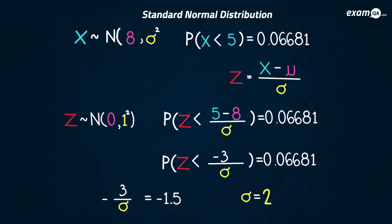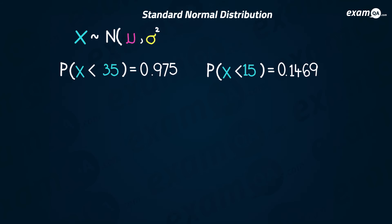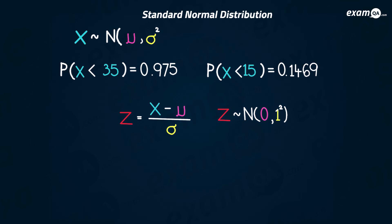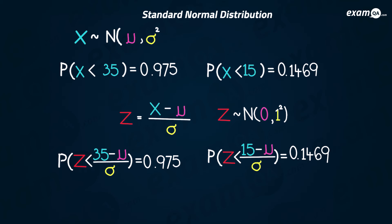Now we've got a more substantial question where we don't know mu or sigma. In these cases you need two pieces of information, and we've got that here. Let's standardize both of them using the formula. The first gives (35 − μ) / σ, and x becomes z. We do the same to the other, so we've standardized both pieces of information.